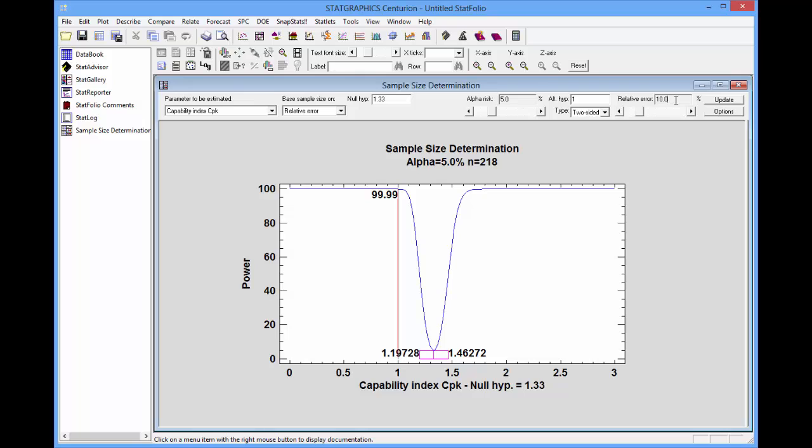And finally, I can set the relative error, that's the width of my confidence interval. It's set to 10%, which is what I want.